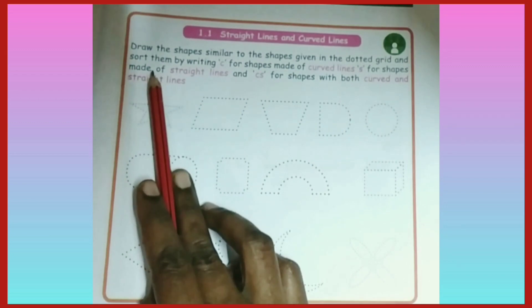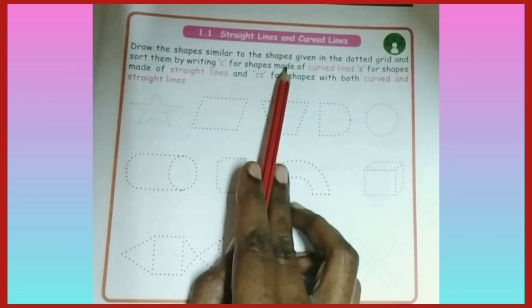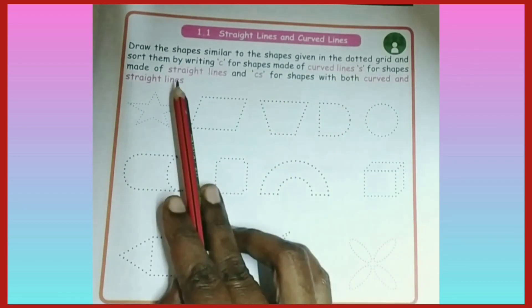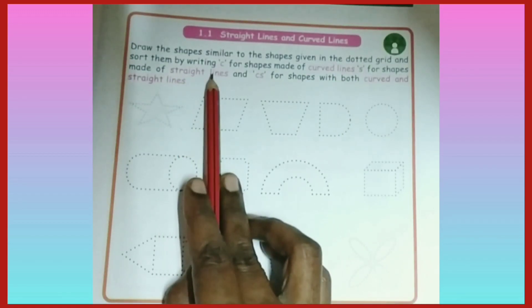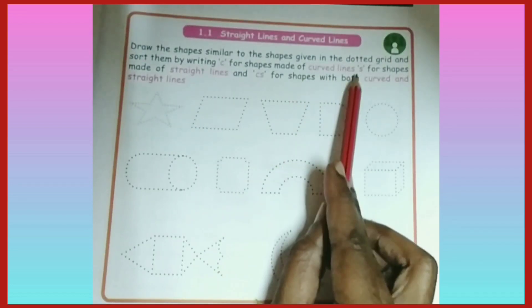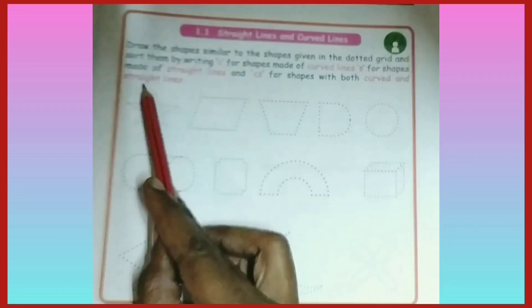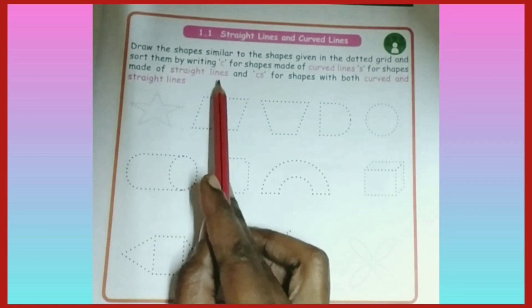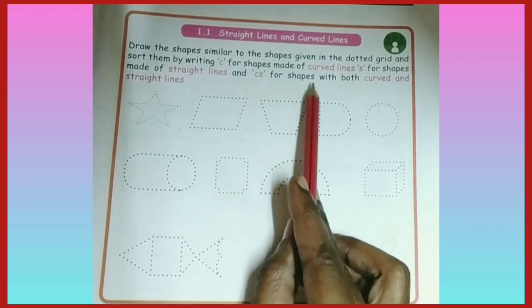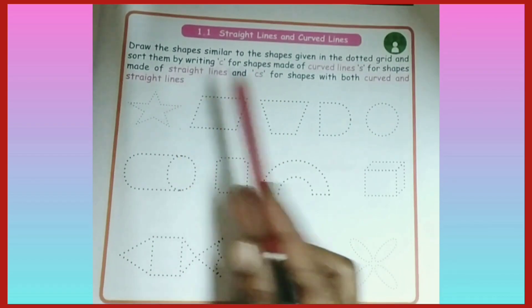Children, let us draw the shapes similar to the shapes given in the dotted grid and sort them by writing C for shapes made of curved lines, S for shapes made of straight lines, and CS for shapes with both curved and straight lines.